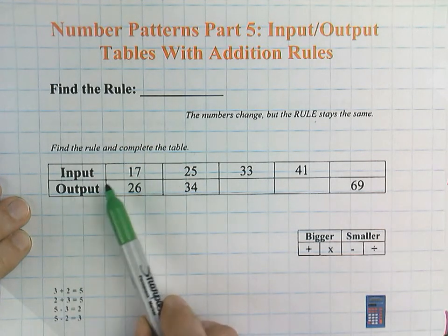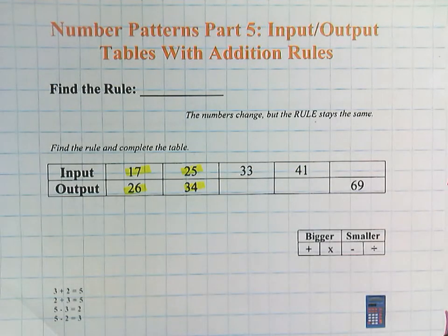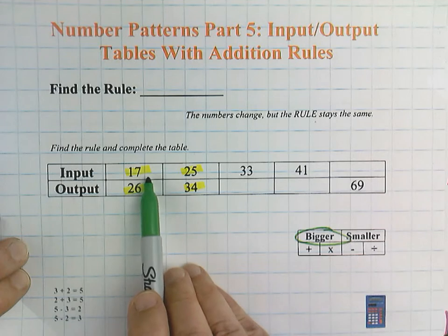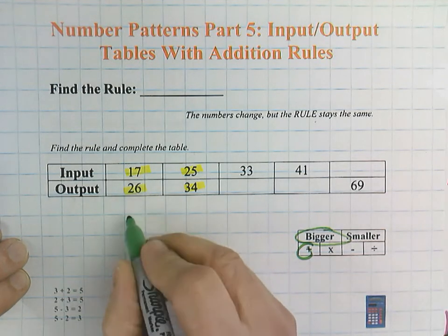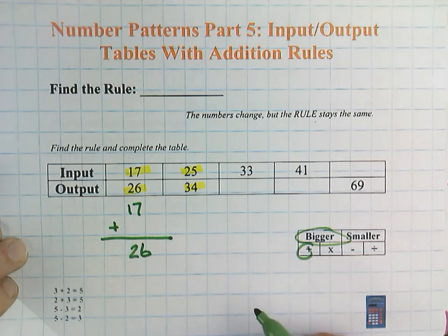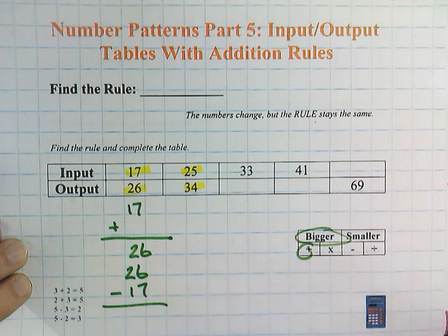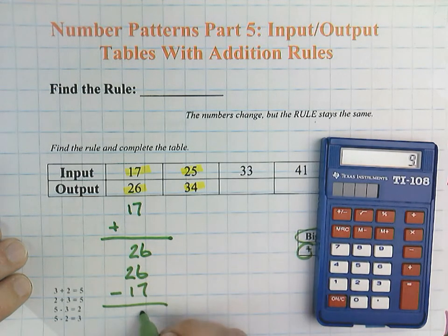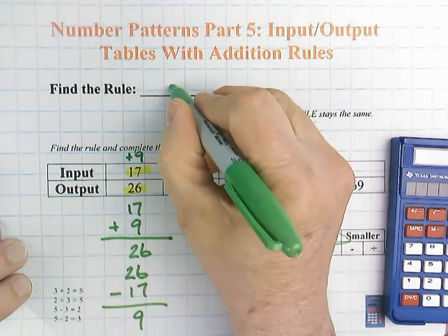Find the rule. Input 17 — notice this table runs from left to right, so the input is on top and the output is on the bottom. The numbers are getting bigger. It could be multiplication, but 17 times any number will not equal 26. So this is a plus rule. 17 plus blank equals 26. Using fact families: 26 minus 17 equals 9, which means the rule is plus 9.